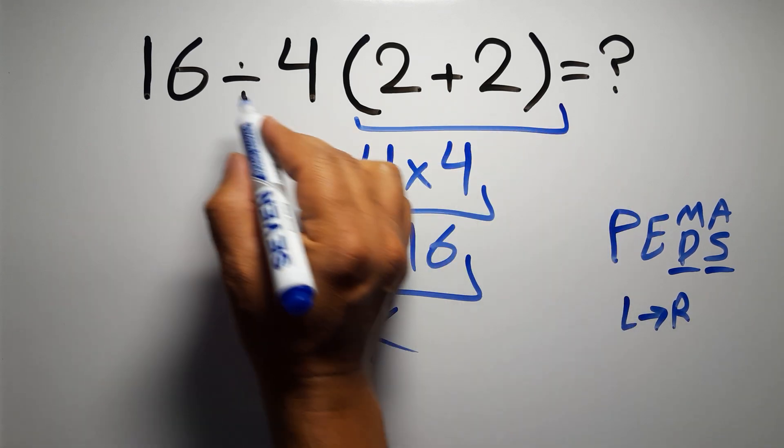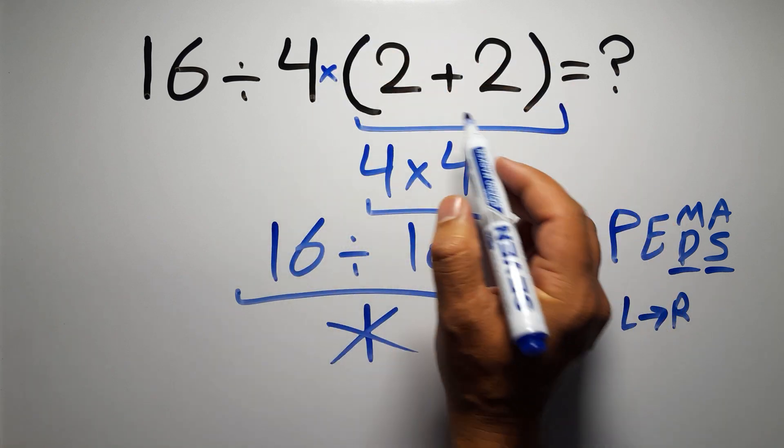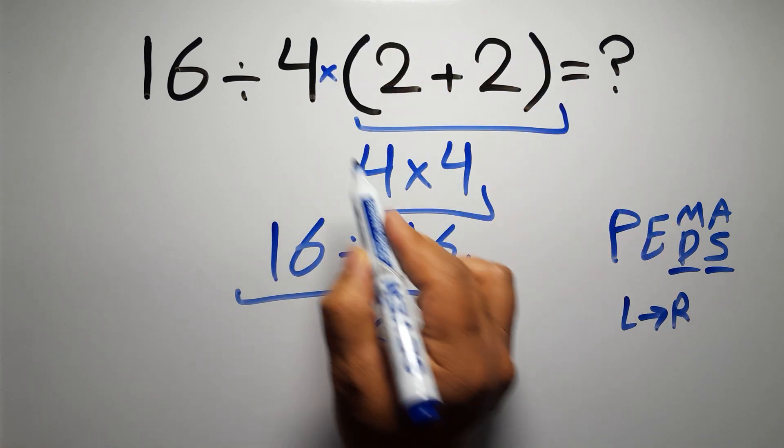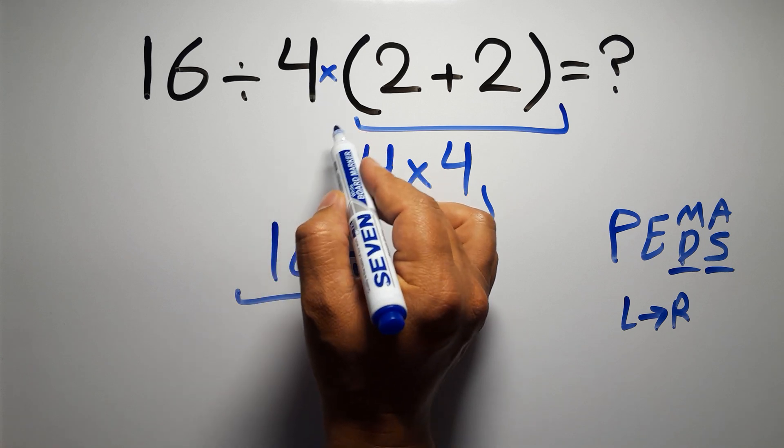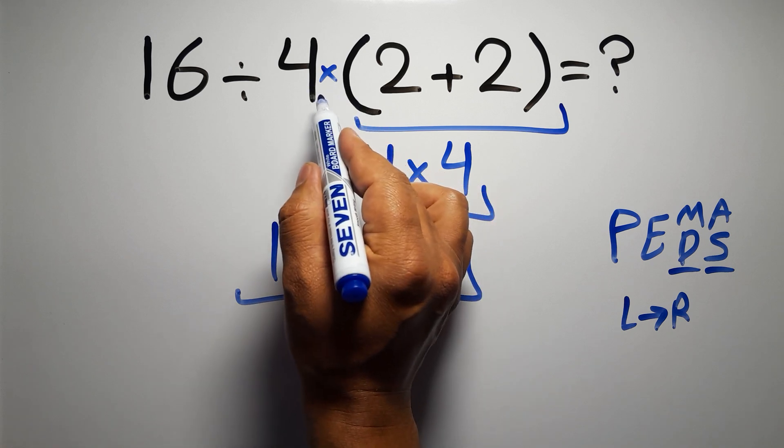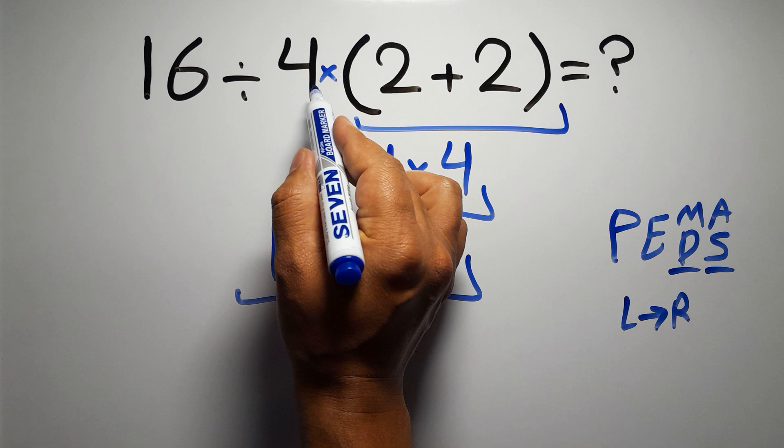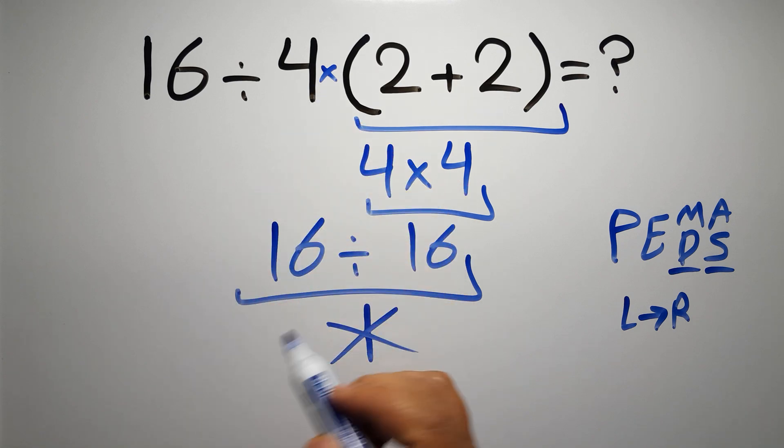In this expression, we have one division, one multiplication, and one parentheses. Inside these parentheses, we have one addition. Here we have a multiplication, because in mathematics, when a number is placed next to parentheses, it means multiplication, and we usually don't write the multiplication sign for brevity.